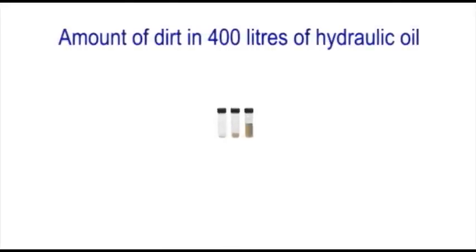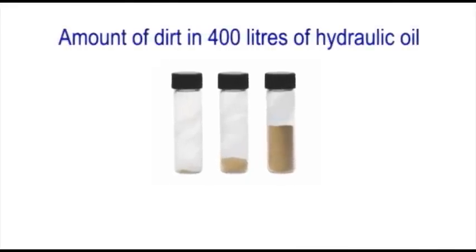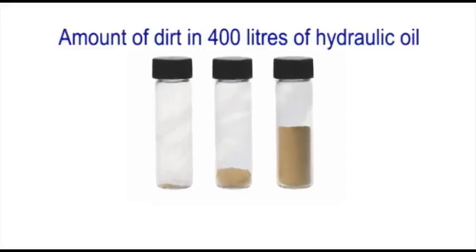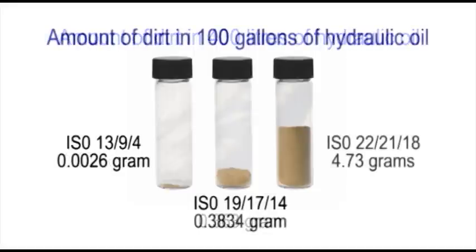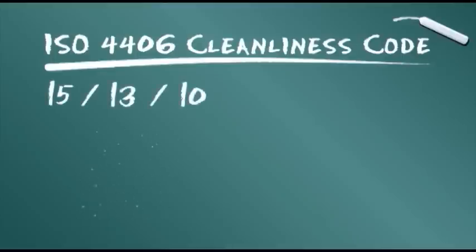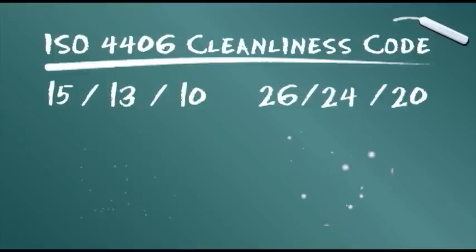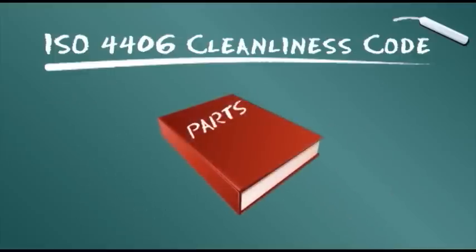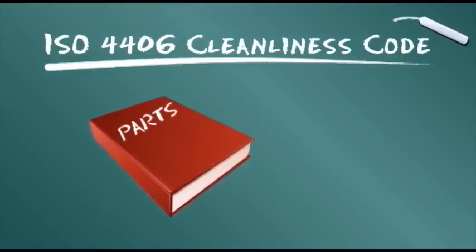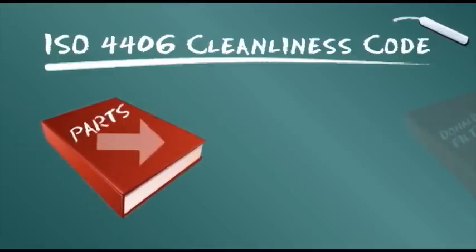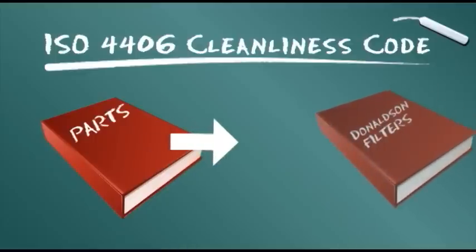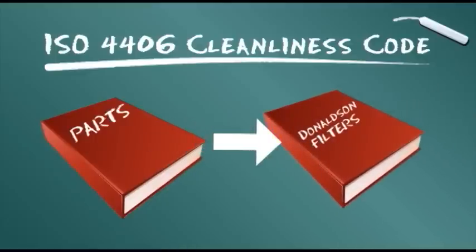Looked at another way, the dirt in these three glass containers each represents a different ISO 4406 cleanliness level. From a tiny fraction of a gram on the left, to about a third of a gram in the middle, to almost 5 grams of dirt on the right. Note how the three cleanliness code numbers also get progressively higher to indicate more dirt and less oil purity. Most component manufacturers specify filtration level recommendations using the ISO code. This code will help you select the filters with the right Donaldson media to meet manufacturer specifications.